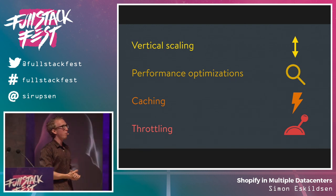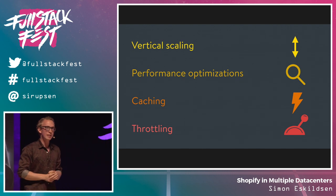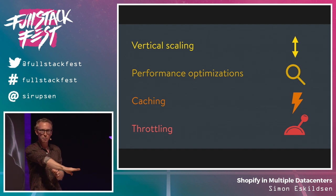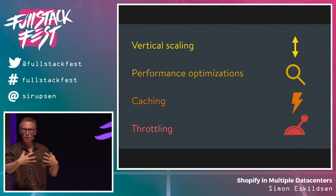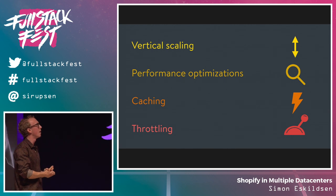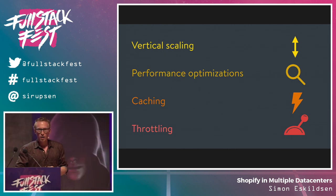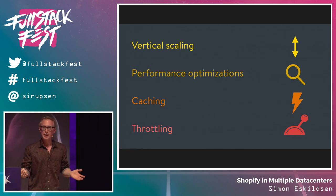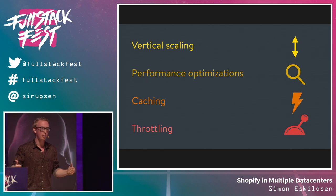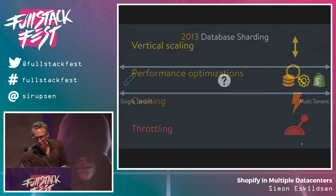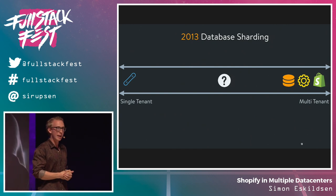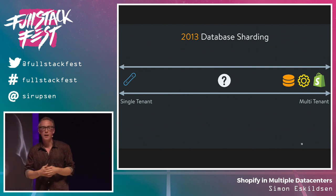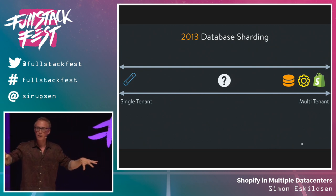But at some point you reach a limit, and we reached that ceiling in 2012. There's a legendary picture of our CTO passed out face-planted on the floor after working for months to support one of the biggest stores at the time. We reached the point where we couldn't vertically scale anymore — at the end of the day, you can't cache a write. You have to scale your writes horizontally at some point. So in 2013 we started working on database sharding, and this is when a full-time infrastructure team was created at Shopify. Only the MySQL side was sharded.